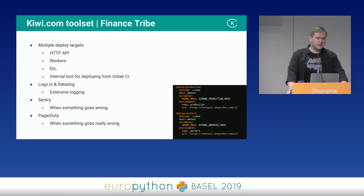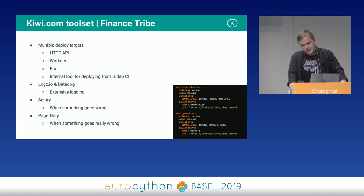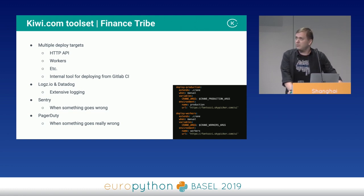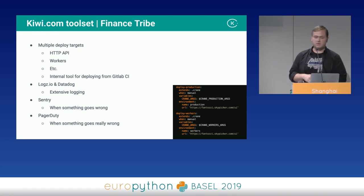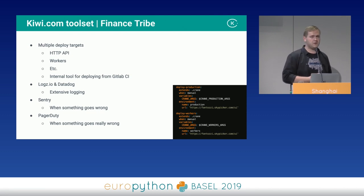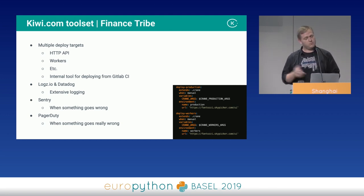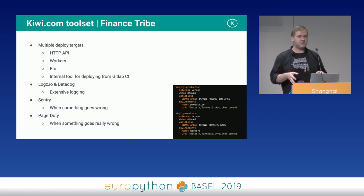Multiple deploy targets: we deploy the REST API itself together with workers and periodic workers. The platform team created a useful tool called Crane, available on our KiwiCom GitHub, which helps you easily deploy to Rancher via GitLab CI and can notify relevant people when you're releasing. With LogsIO and Datadog, we extensively log everything — when it doesn't log, it didn't happen. We're moving toward Datadog to join tracing and logs with their APM.